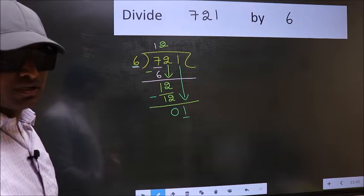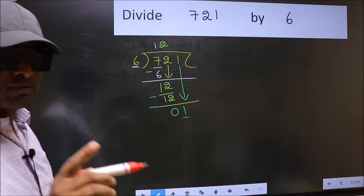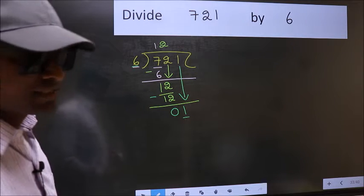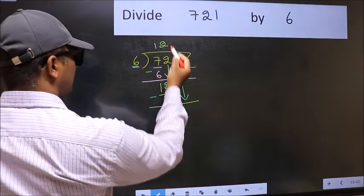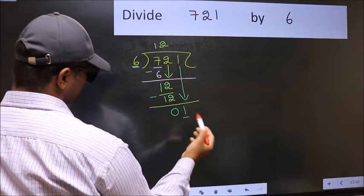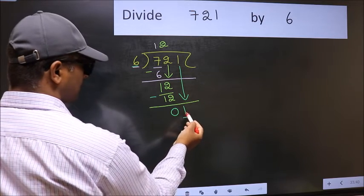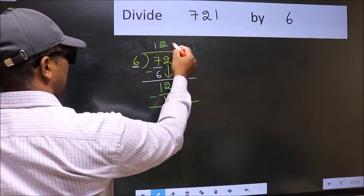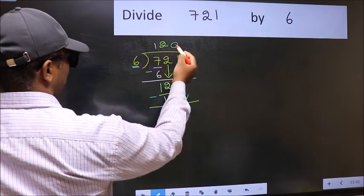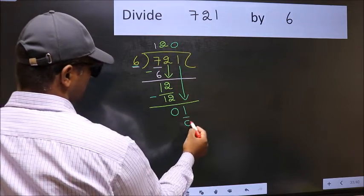Instead, what you should think of doing is, what number should we write here. If I take 1, we will get 6. But 6 is larger than 1. So, we should take 0. So, 6 into 0, 0.